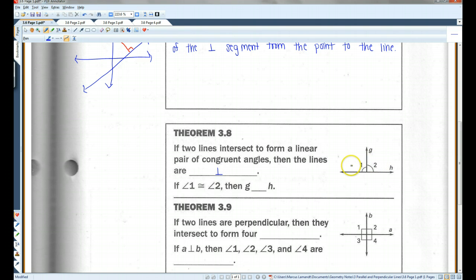well, then they both have to be 90 degrees. Right? Because that's the only way they can be the same measure, and both add up to 180. So, if angle 1 is congruent to angle 2, then G is perpendicular to H.